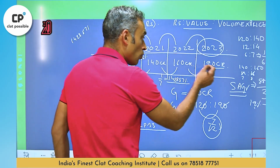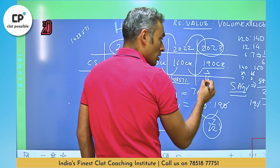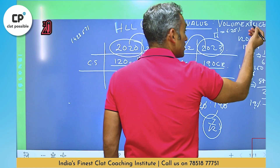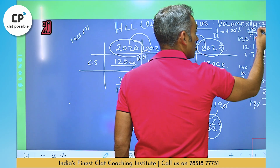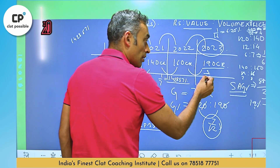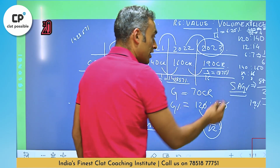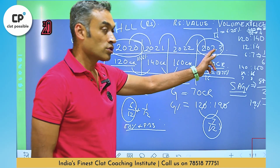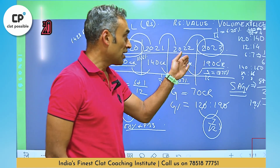From 160 to 190, it's 16 becoming 19, so the growth is 3 upon 16. Since 1/16 is 6.25% — because 100/16 = 50/8 = 25/4 = 6.25 — then 3/16 equals 6.25 times 3, which is 18.75%. So the maximum growth rate is from 2022 to 2023 at 18.75%.